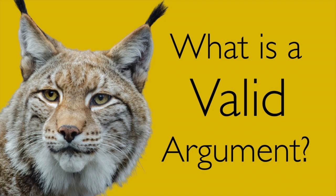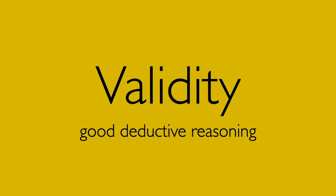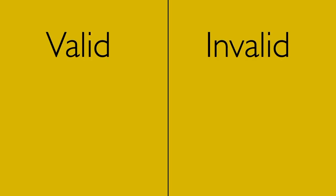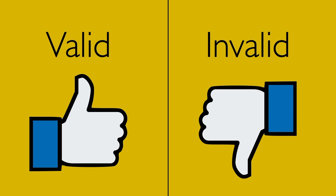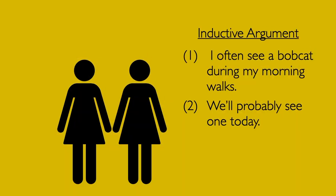Buckle up for this one. Validity is one of the toughest concepts in logic. Validity is the technical term for good deductive reasoning. To say a deductive argument is valid is to say that its reasoning is solid. An invalid argument, on the other hand, is reasoning gone wrong. So valid and invalid are terms we use to evaluate deductive arguments — they tag the reasoning as success or failure. Only deductive reasoning is in play here. You would never call an inductive argument valid or invalid.